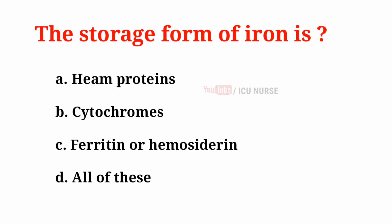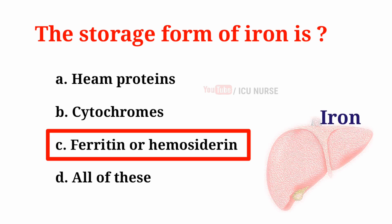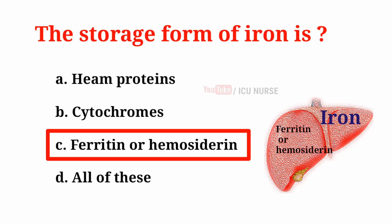The storage form of iron is: A. Heme proteins, B. Cytochromes, C. Ferritin or Hemosiderin, D. All of these. And the correct answer is C. Ferritin or Hemosiderin. Iron is mostly stored in the liver as ferritin or hemosiderin.